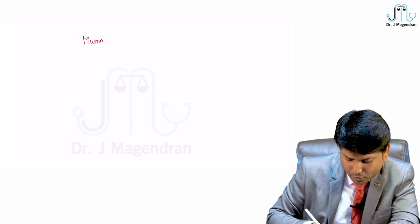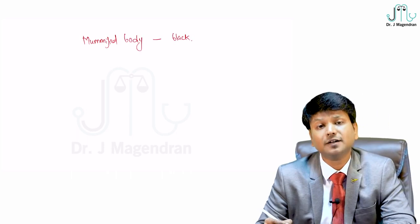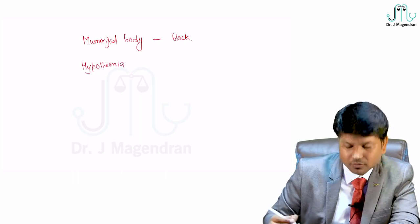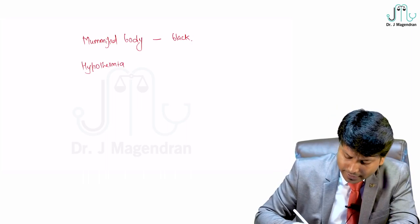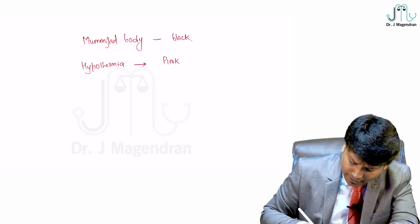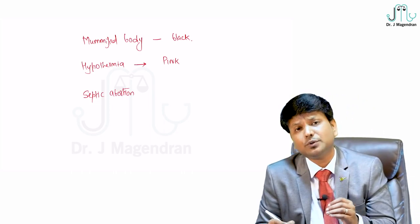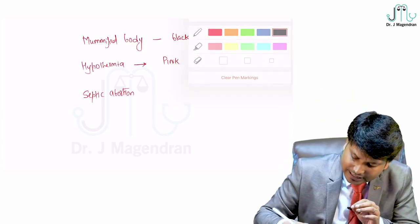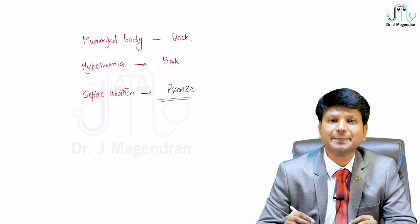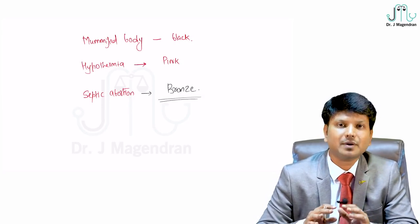A mummified body gives black color hypostasis. Hypothermia cases or refrigerated bodies (in cold chamber) give pink color hypostasis. Septic abortion — particularly due to Clostridium infection — gives bronze colored hypostasis. Remember: when the question mentions septic abortion, the answer is bronze. With this knowledge, you can solve most MCQs on hypostasis and poisoning.